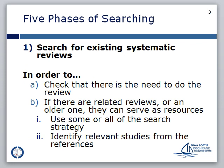The purpose of the first phase, searching for existing systematic reviews, is to reaffirm whether there is a need for a new systematic review on your topic. If there is already a recent, well-conducted systematic review on precisely your review question, it would be a good idea to revise your question to investigate a topic not yet covered.